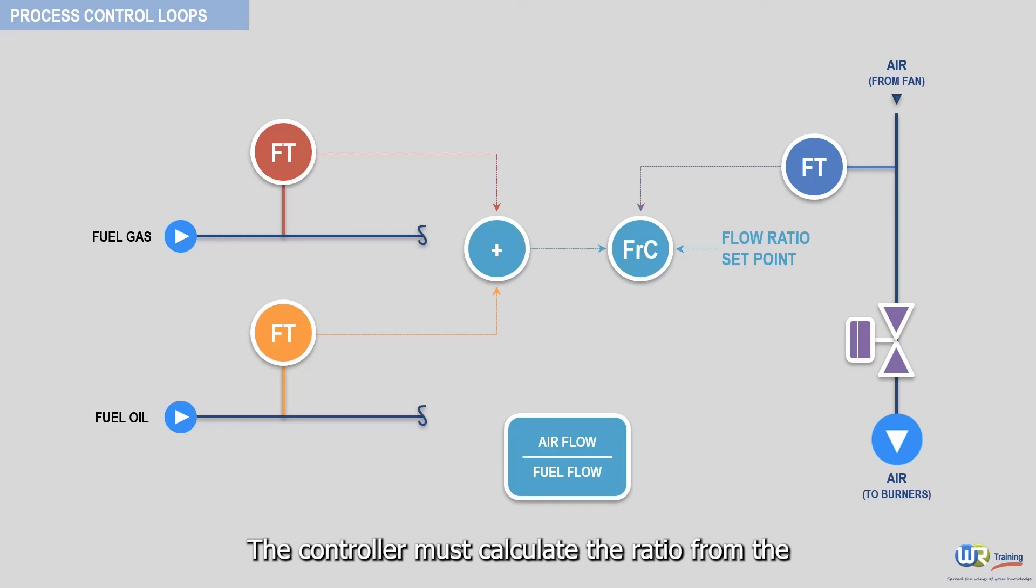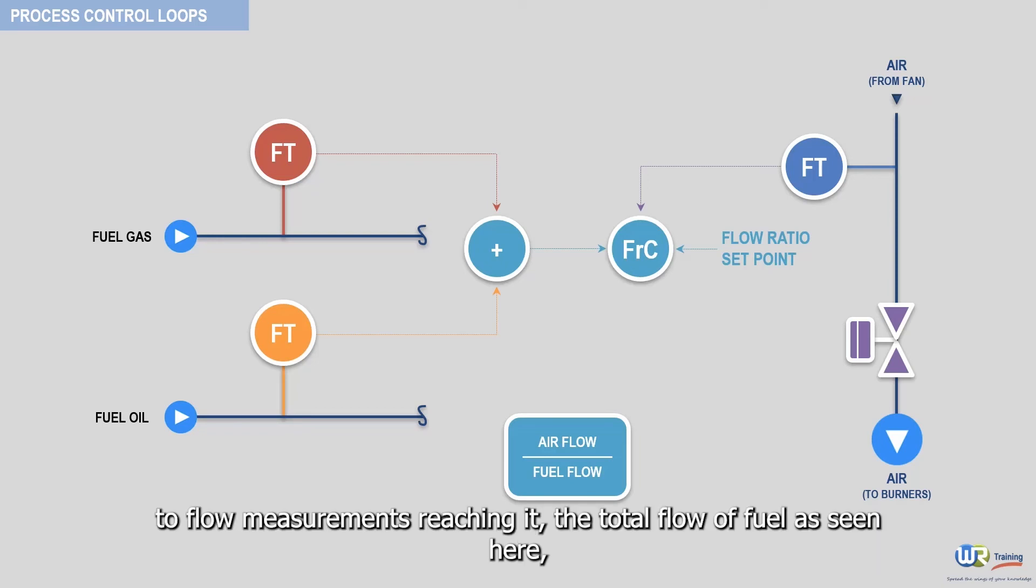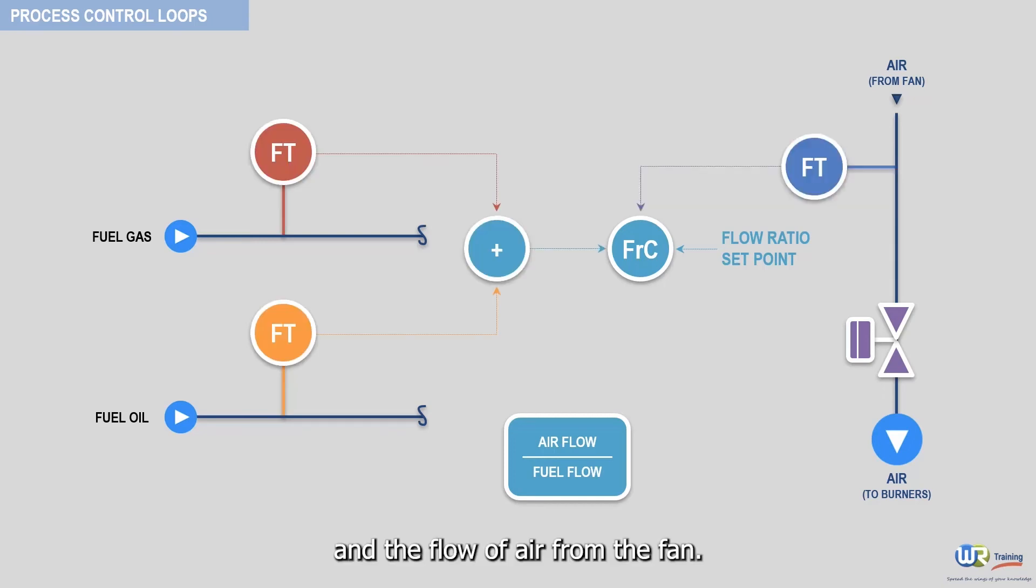The controller must calculate the ratio from the two flow measurements reaching it, the total flow of fuel and the flow of air from the fan. The controller then compares the calculated ratio with the imposed ratio set point. Then it modifies accordingly the valve signal, which controls louvers located on the airflow towards the burners.